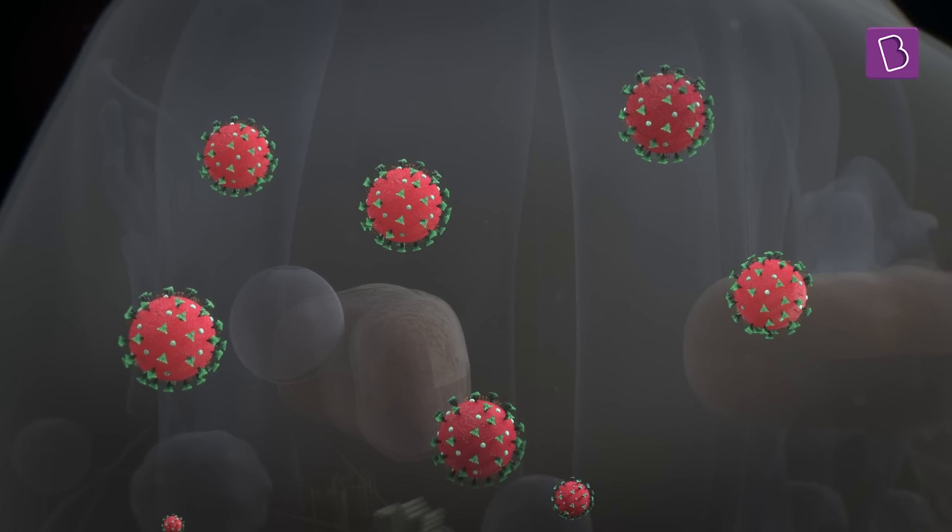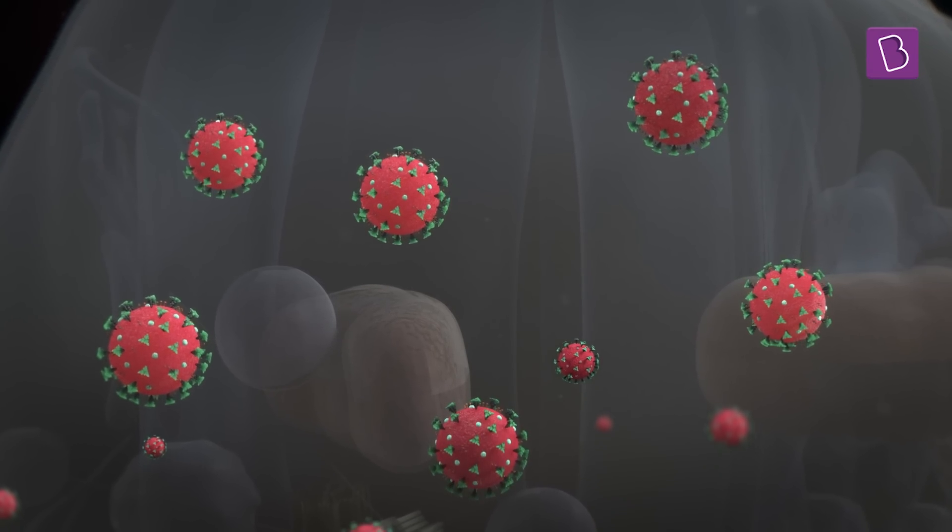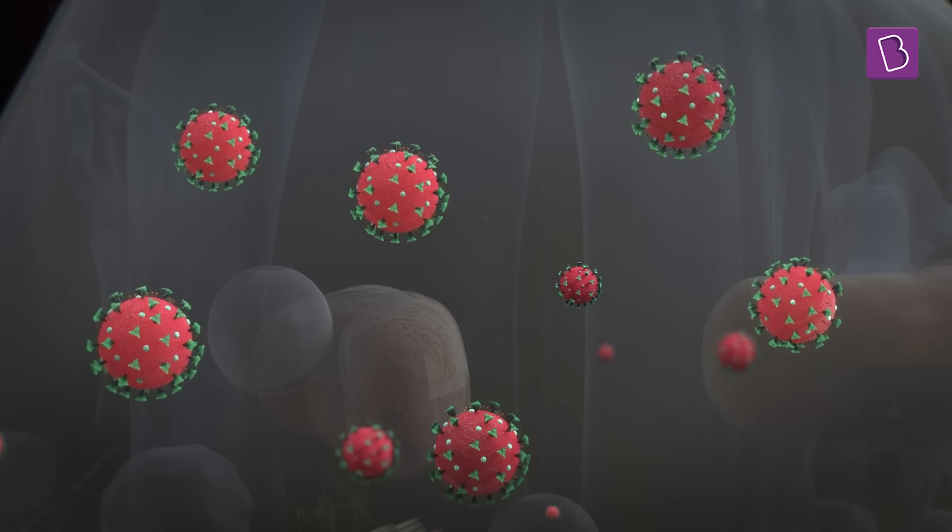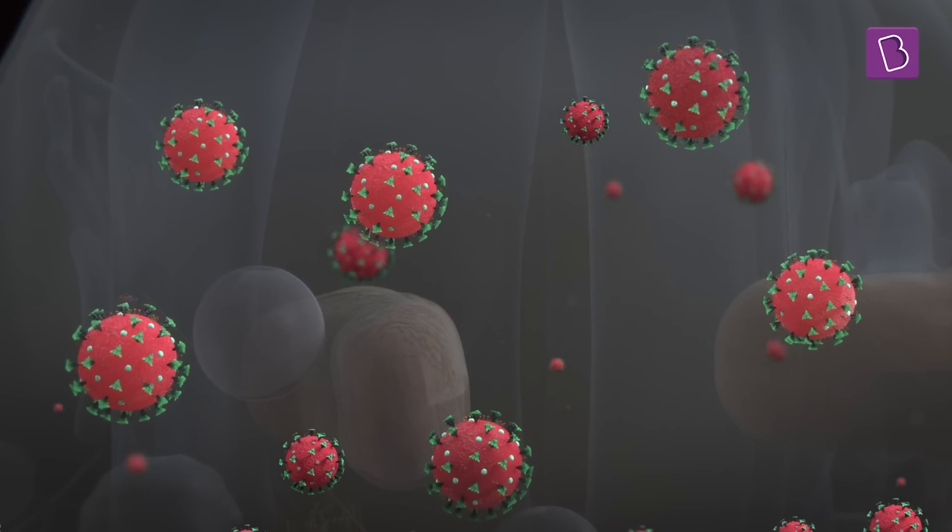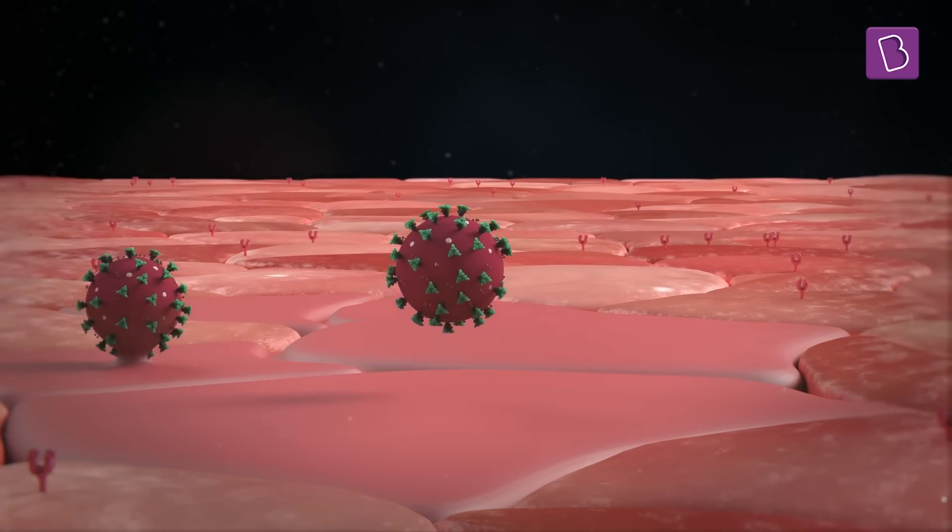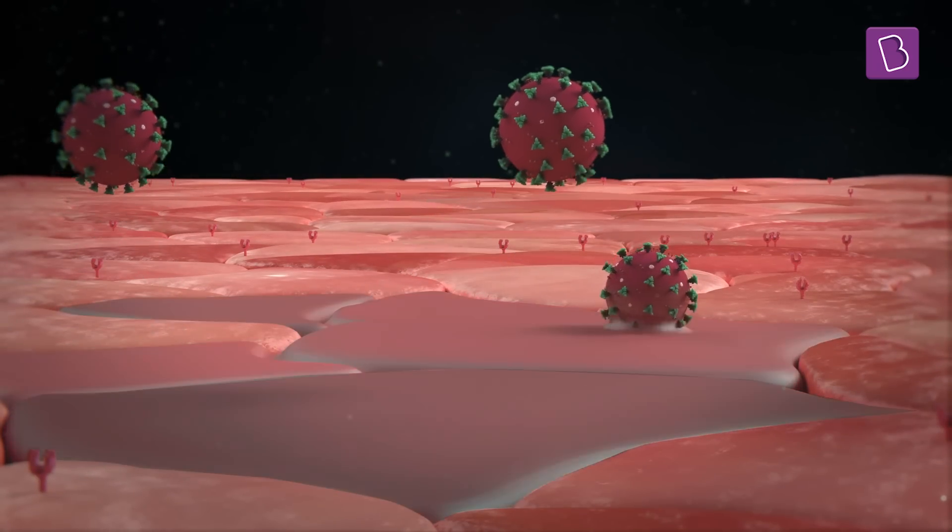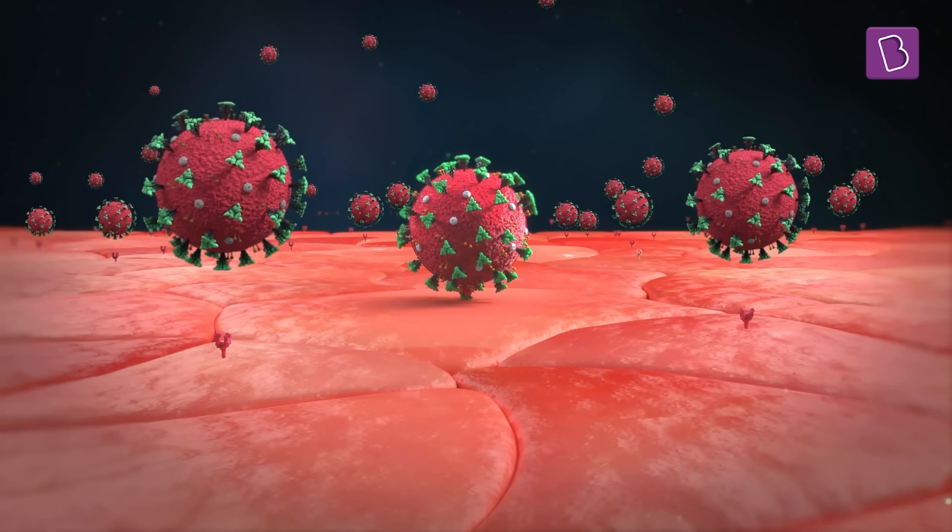This is somewhat like tricking the enemy's recruitment facility into hiring troops for your own army. One cell can actually make millions of copies of the virus before all the viruses burst out of that particular cell, leaving it dead. Now, these viruses go on to infect other cells.